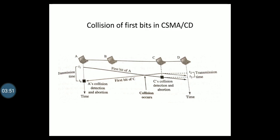Station A detects a collision at time T4 when it receives the first bit of C's frame, and it also immediately aborts transmission. So station A transmits for the duration T4 minus T1, and station C transmits for the duration T3 minus T2.